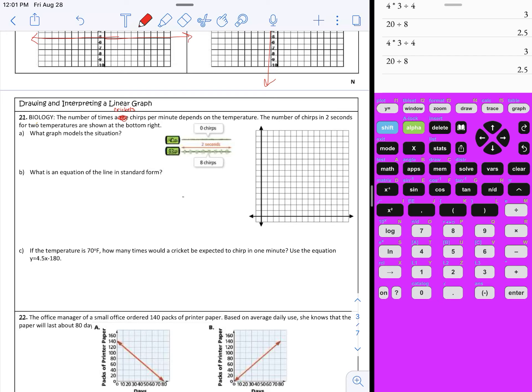Anything in real life that increases or decreases at a constant rate would be a linear equation. They have found that the number of times a cricket chirps in a minute depends on how warm it is outside. We know this from summer - we hear more crickets than we do in winter. The number of chirps in two seconds is shown down here: zero chirps at 40 degrees and eight chirps at 93 degrees.